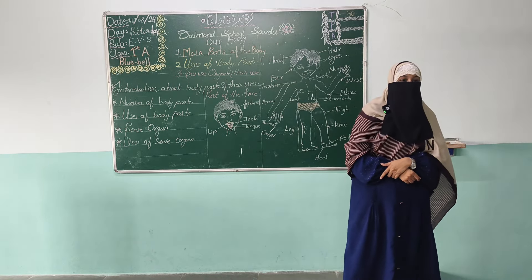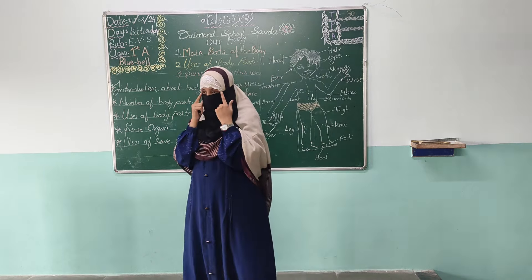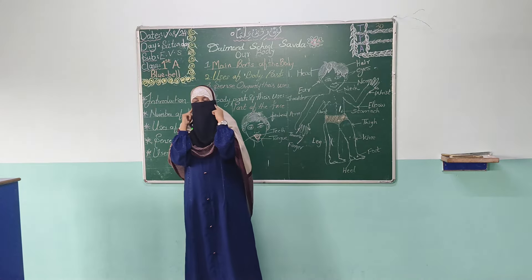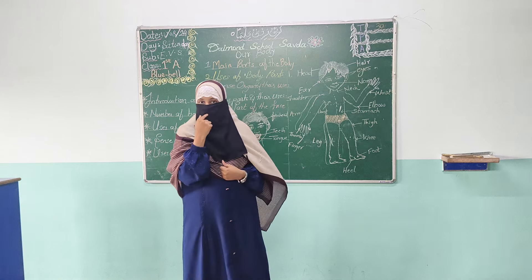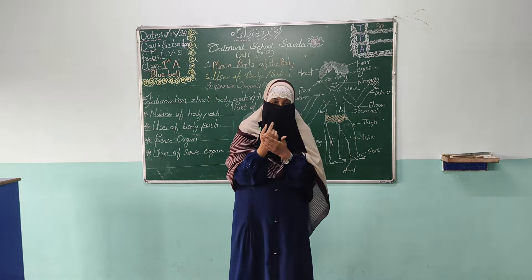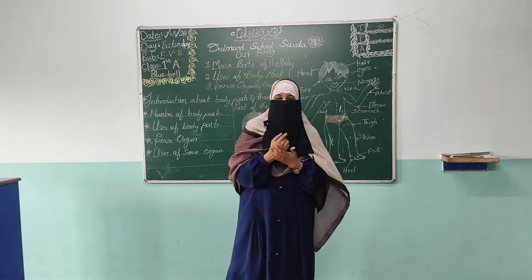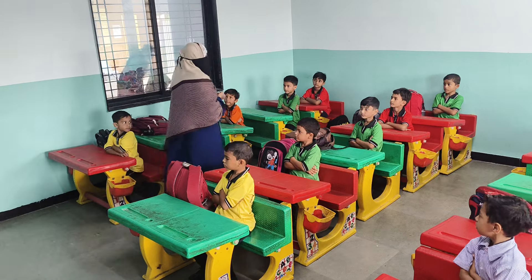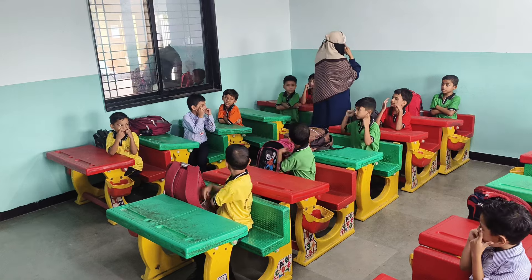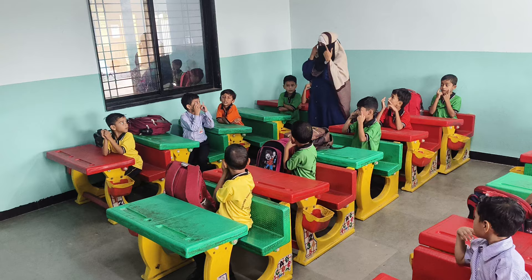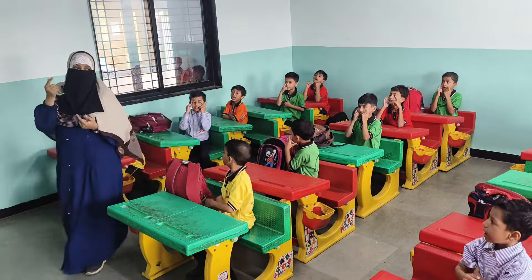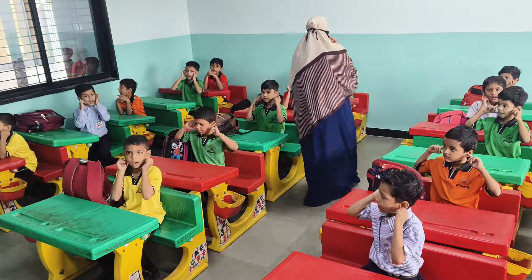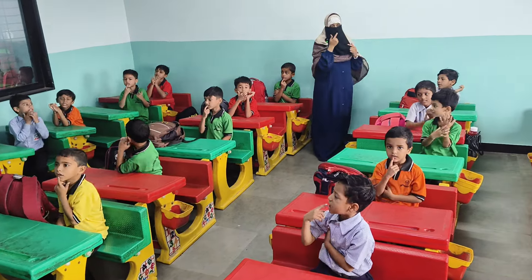Now tell me the uses of the sense organs. I can see. With the help of eyes we can see different colors. What is the use of each sense? I can see; my nose — I can smell; I can hear with my ears.